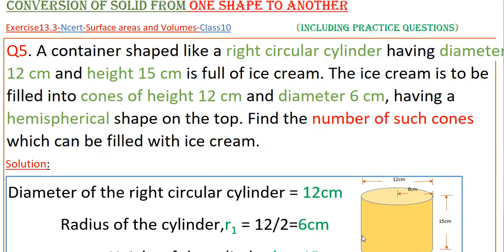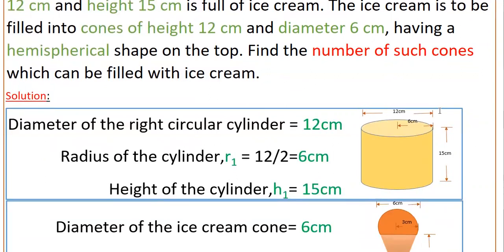So here this is the right circular cylinder which is full of ice cream, and the diameter of this cylinder is given, that is 12 cm. So diameter of this cylinder is 12 cm, therefore radius of the cylinder R1 is equal to diameter by 2, that is 6 cm. And height of the cylinder H1 is equal to 15 cm. And this ice cream is to be filled into cones of height 12 cm and diameter 6 cm.